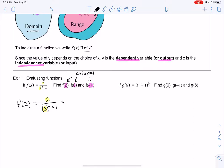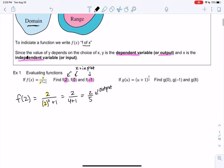And so let's see, we get 2 over 4 plus 1, or 2 fifths. So that's my y value or my output. So we plug 2 into the machine, and it outputs 2 fifths.